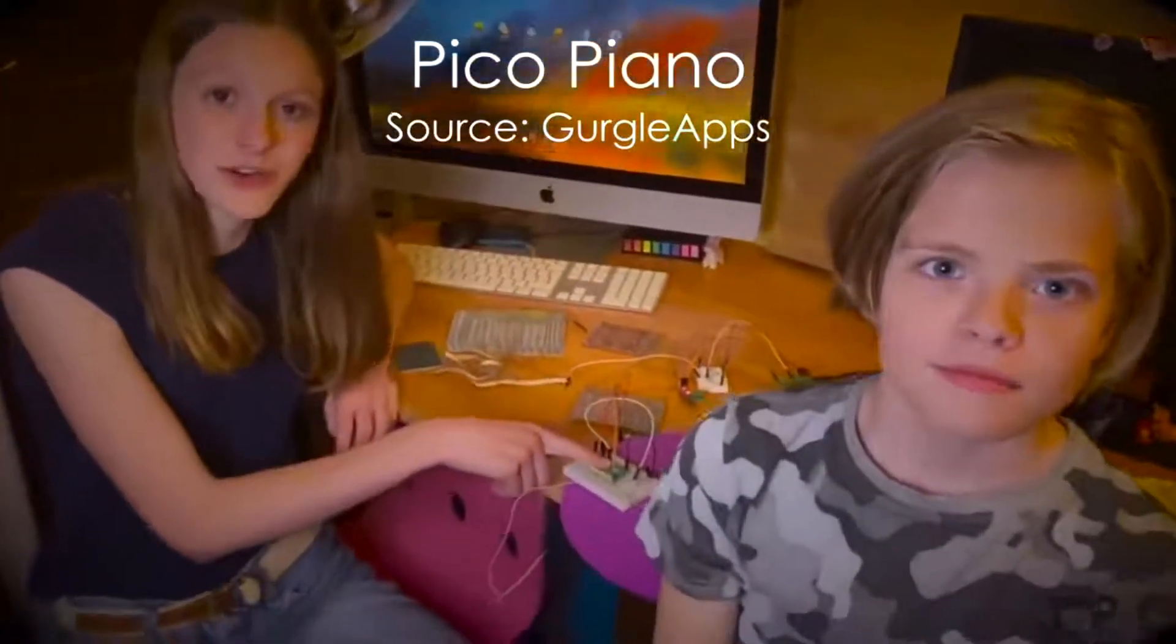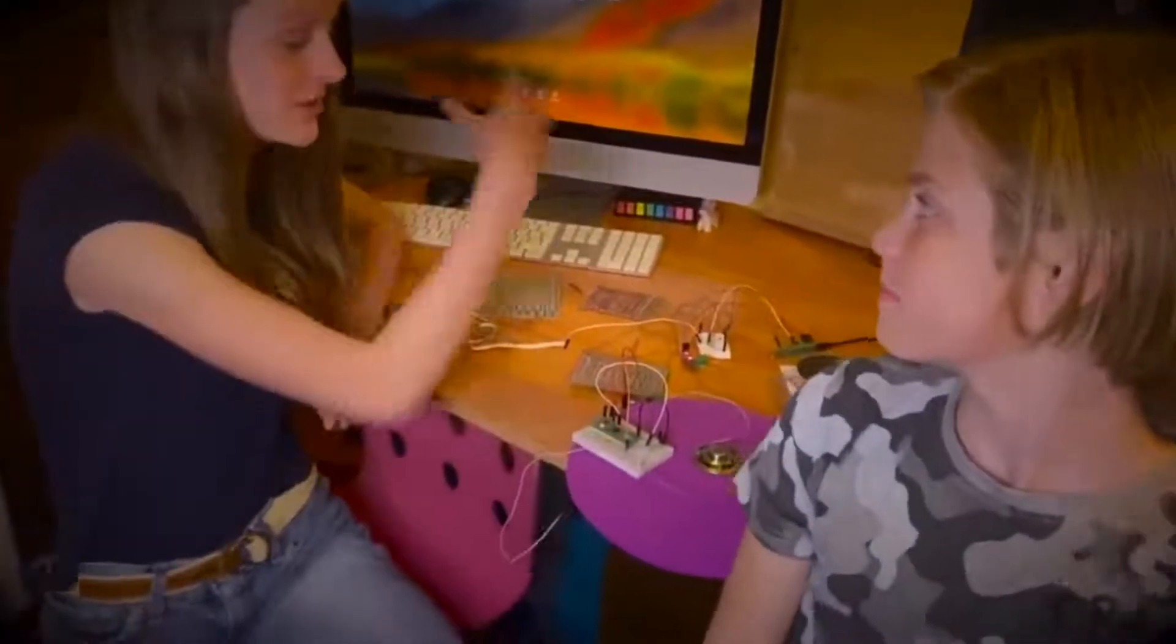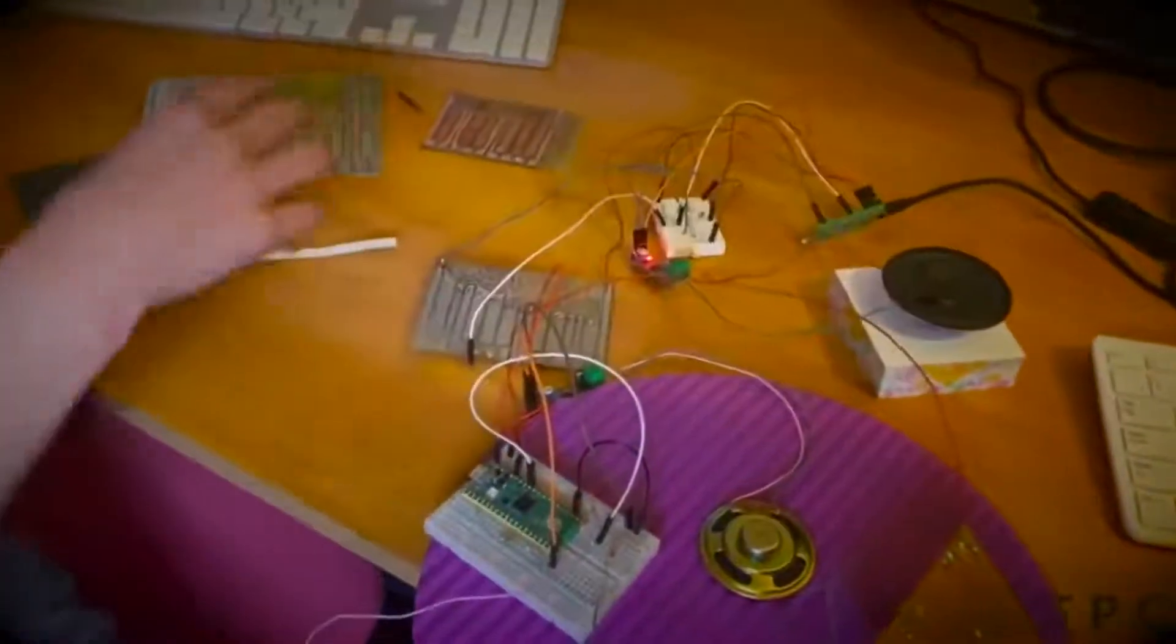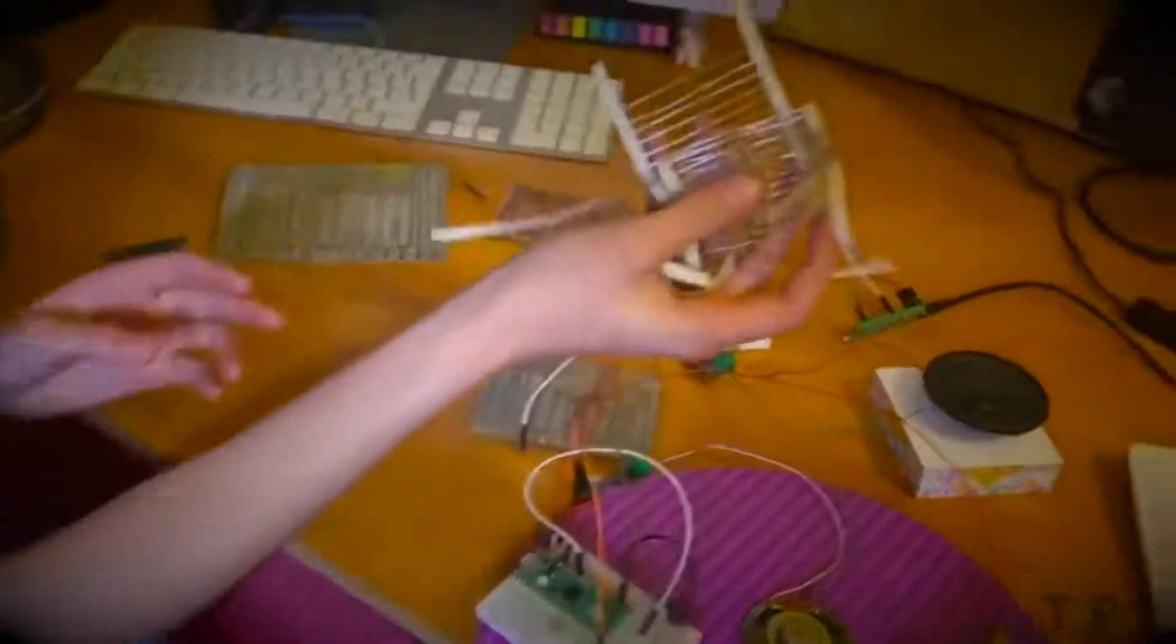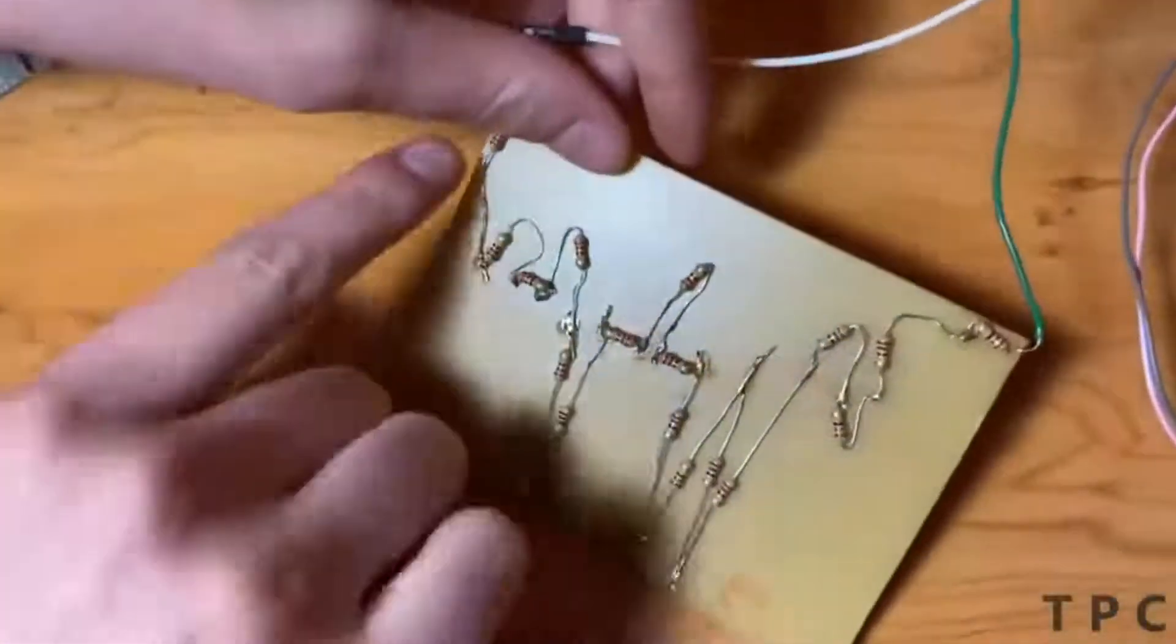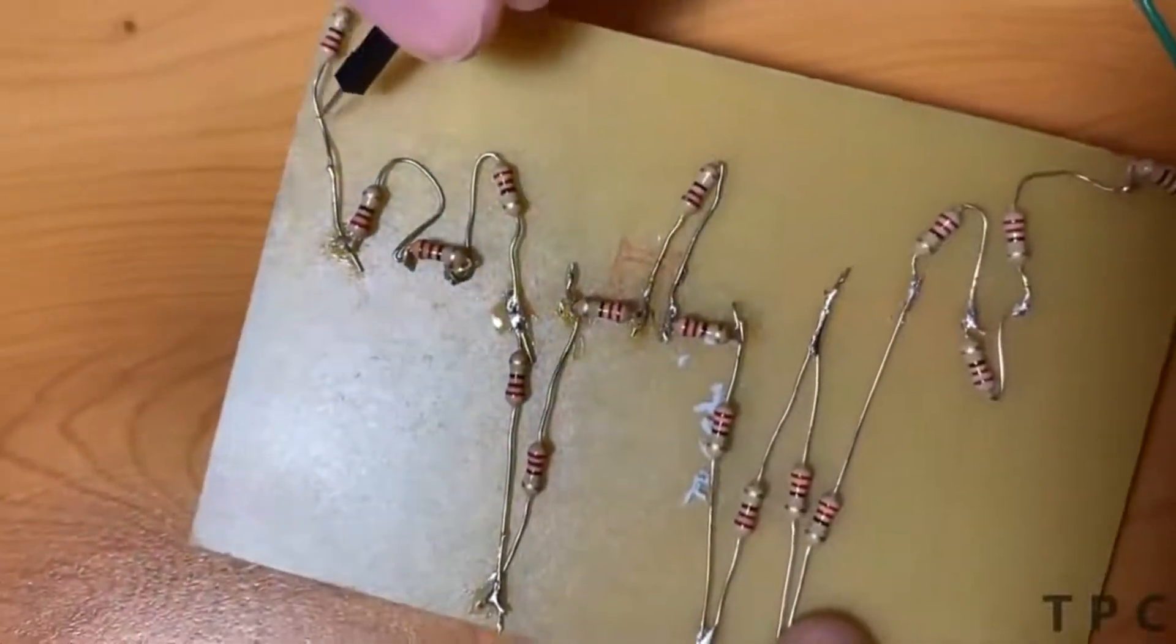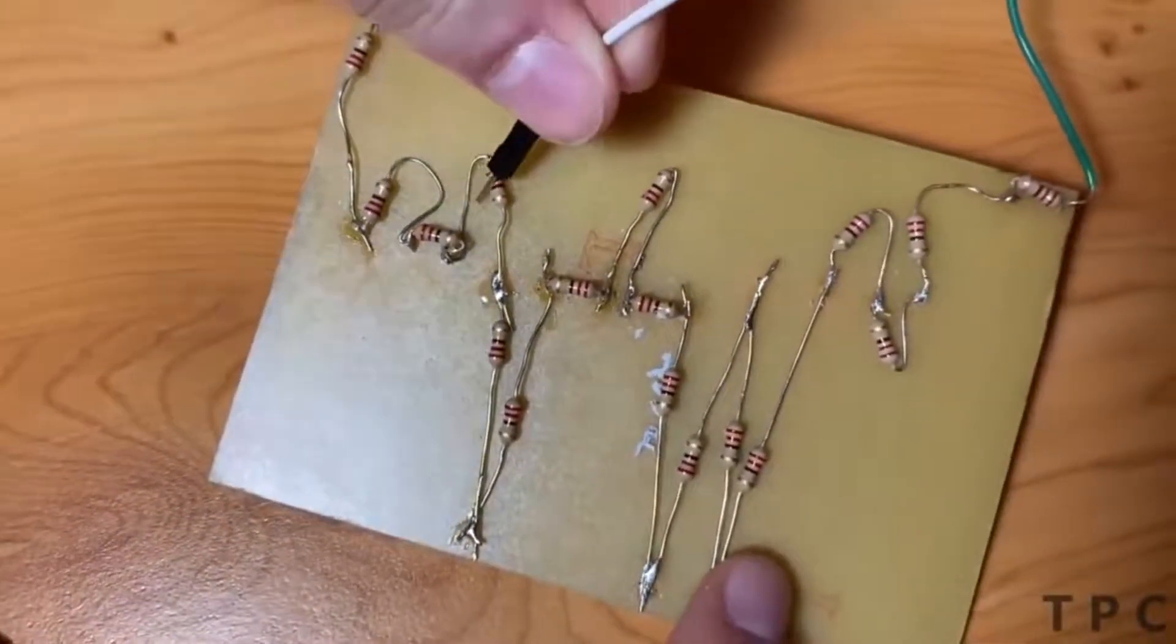The next one is a Pico-based piano. The components used in this project are a Raspberry Pi Pico, jumper wires, speakers, and some resistors. So looking on the back side of the board we will see a string of resistors. The tone sound changes when we touch the jumper wire after a resistor.